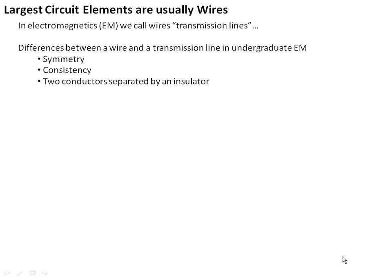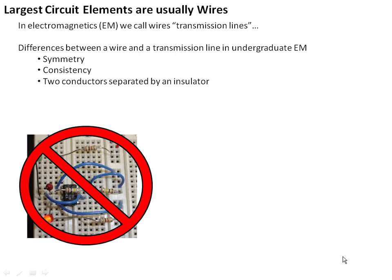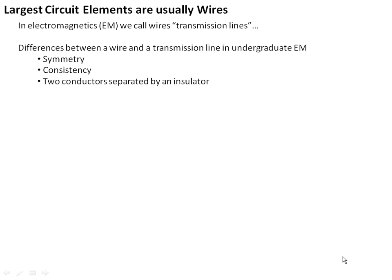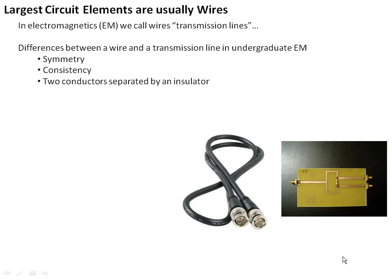So you remember that we've gone over the fact that transmission lines have symmetry, consistency, and two conductors separated by an insulator. So this, for example, is not a transmission line, but coaxial lines, pairs of lines, and things like coaxial cables.